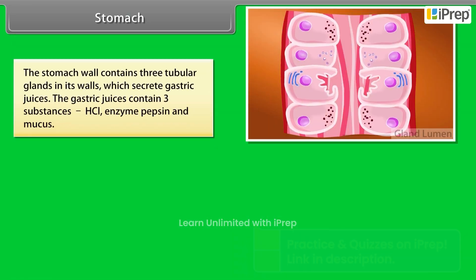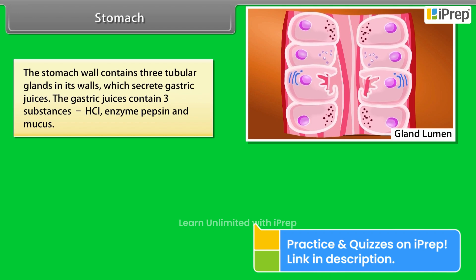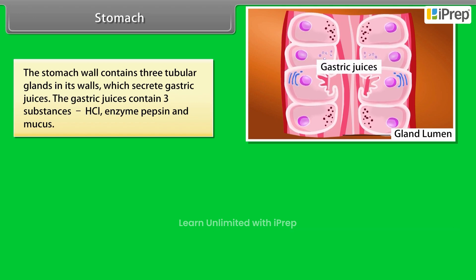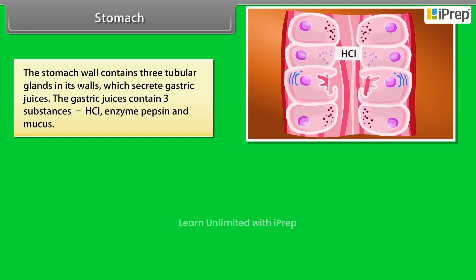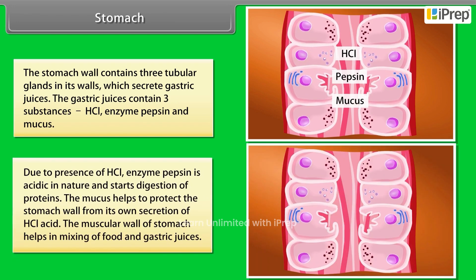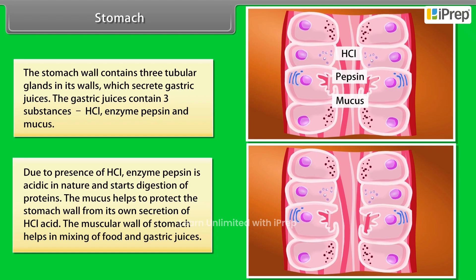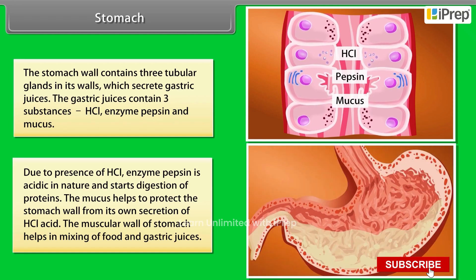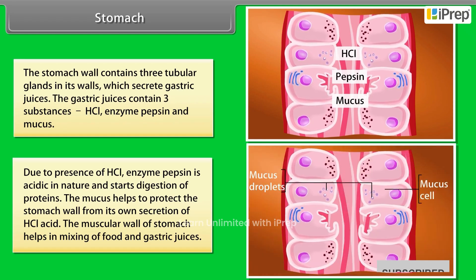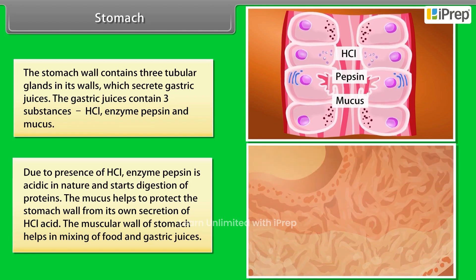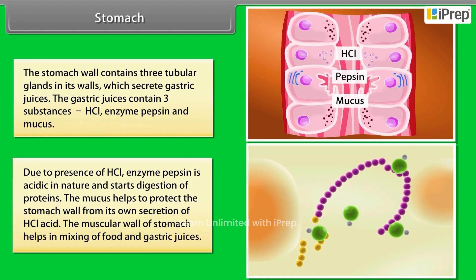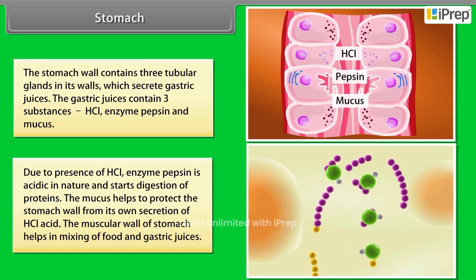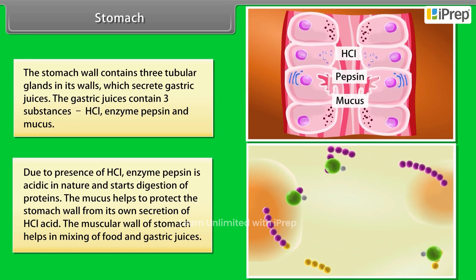The stomach wall contains tubular glands which secrete gastric juices. These gastric juices contain three substances: HCl, the enzyme pepsin, and mucus. HCl makes the environment acidic, enabling pepsin to start digestion of proteins. The mucus helps protect the stomach wall from its own secretion of HCl. The muscular wall of the stomach helps in mixing food and gastric juices.